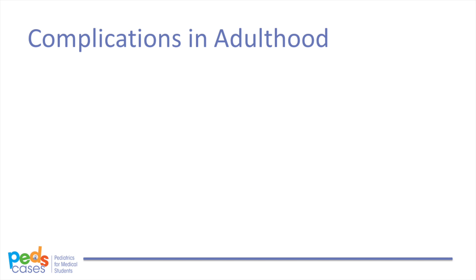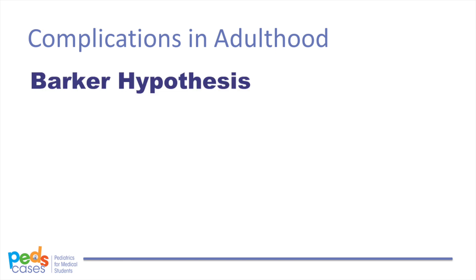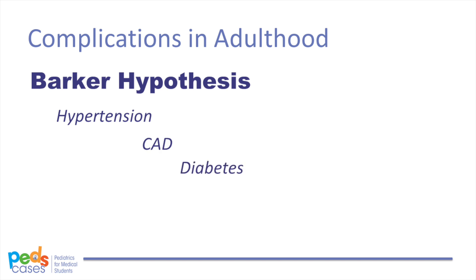Regular follow-up with a pediatrician is essential for children born with IUGR, in order to diagnose issues as they come up and initiate appropriate treatment in a timely manner. Many chronic diseases of adulthood have also been linked to IUGR. This is called the developmental origin of health and disease. The most widely accepted theory to explain this link is the Barker hypothesis, which states that when the fetus is developing in suboptimal antenatal conditions, it adapts to survive. This leads to permanent epigenetic changes, including decreased fetal insulin and IGF-1 sensitivity and production, upregulation of the hypothalamic-pituitary-adrenal axis, and promoting brain development while sacrificing growth of other organs. These changes predispose IUGR infants to developing many chronic conditions in adulthood, such as hypertension, coronary artery disease, diabetes, cancer, neurologic conditions, and psychiatric conditions.